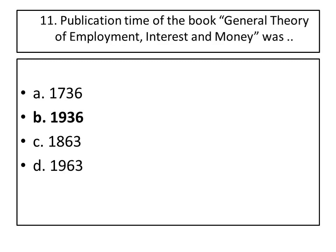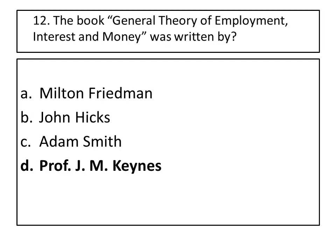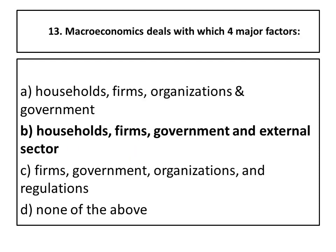Eleventh question: the publication year of the book General Theory of Employment, Interest and Money was 1936. Twelfth question: the book General Theory of Employment, Interest and Money was written by Professor J.M. Keynes.